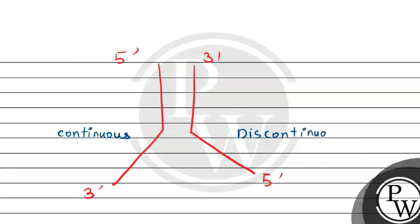The replication fork - you can see it has 5' and 3' ends. This strand is continuous synthesis and here is discontinuous. This is our template DNA which is the parental strand, and here is our newly synthesized strands. Here it will be continuous, 5' to 3', and here it will be discontinuous. This is our newly synthesized strand.